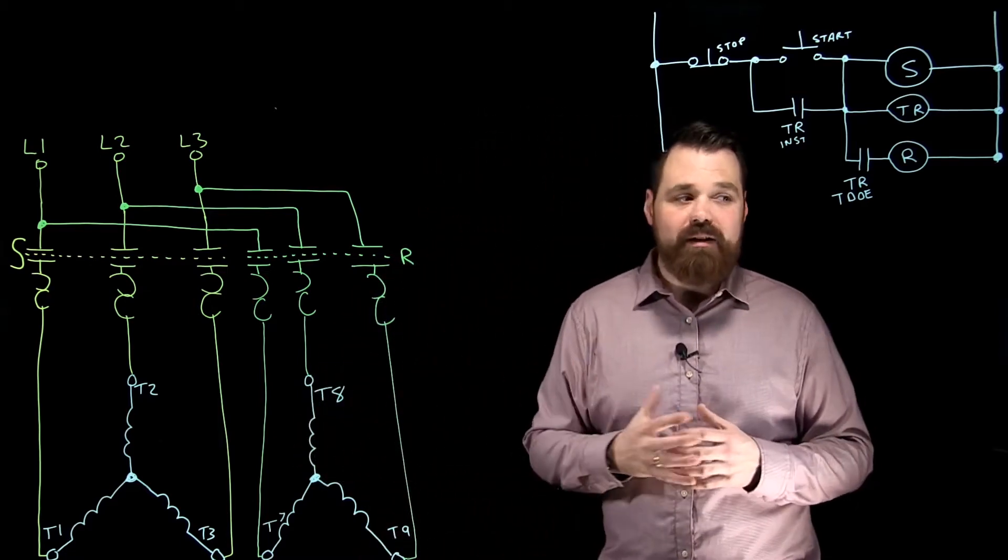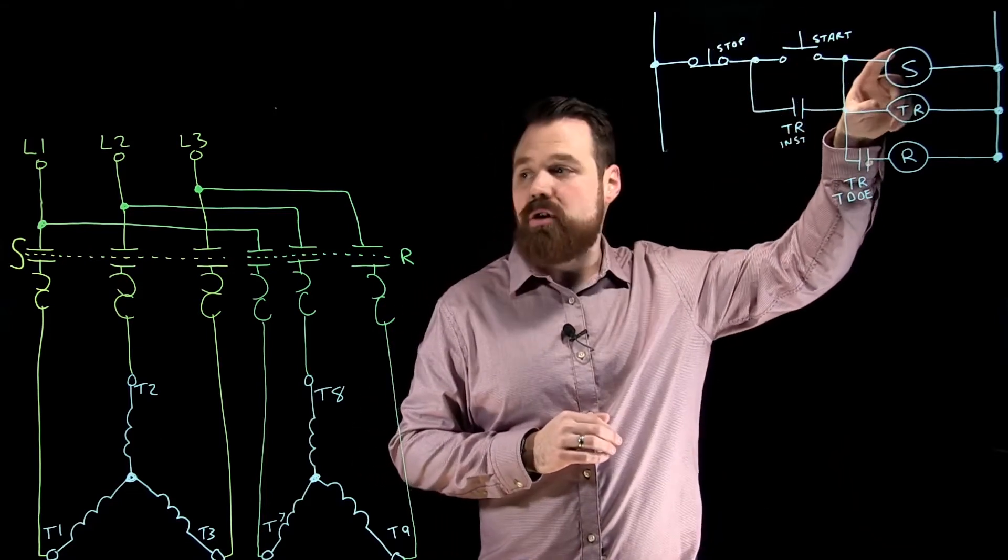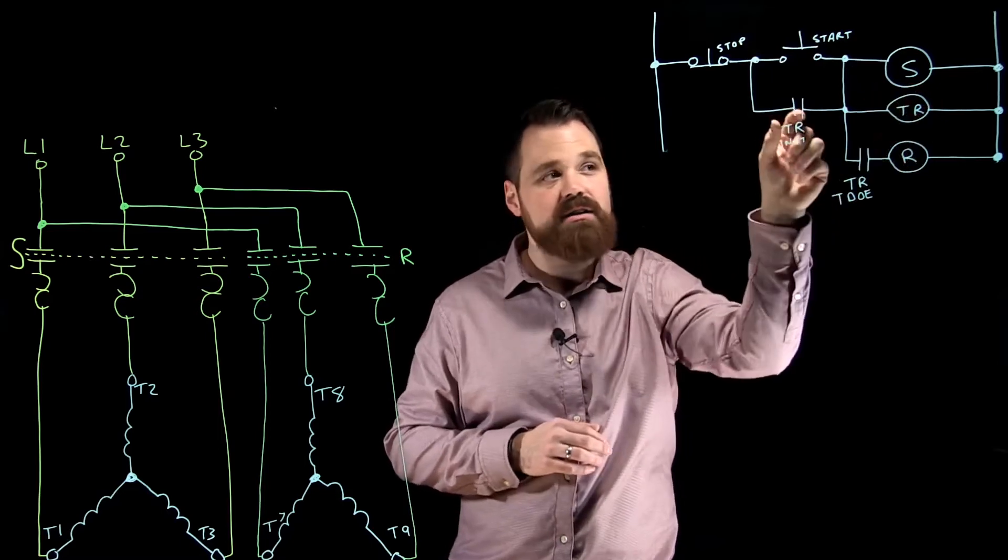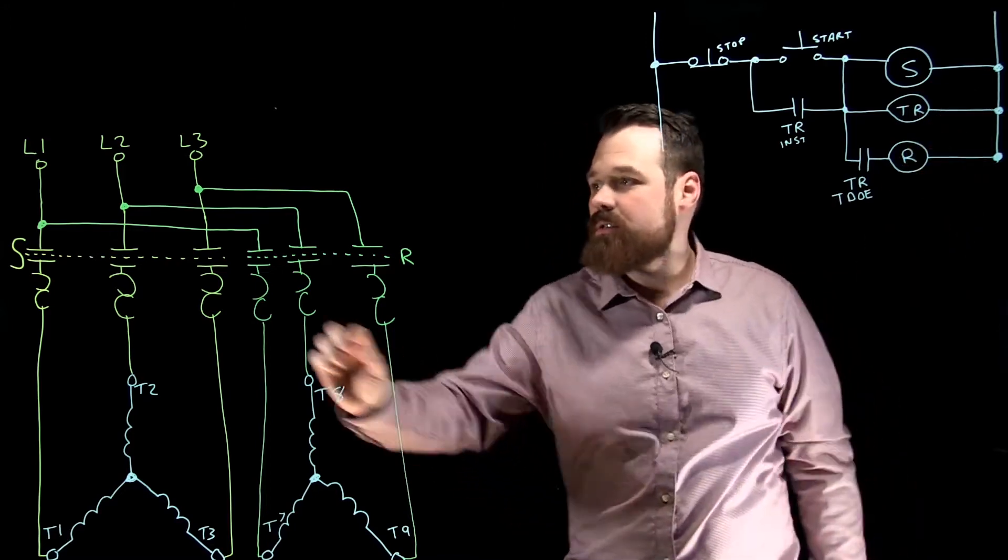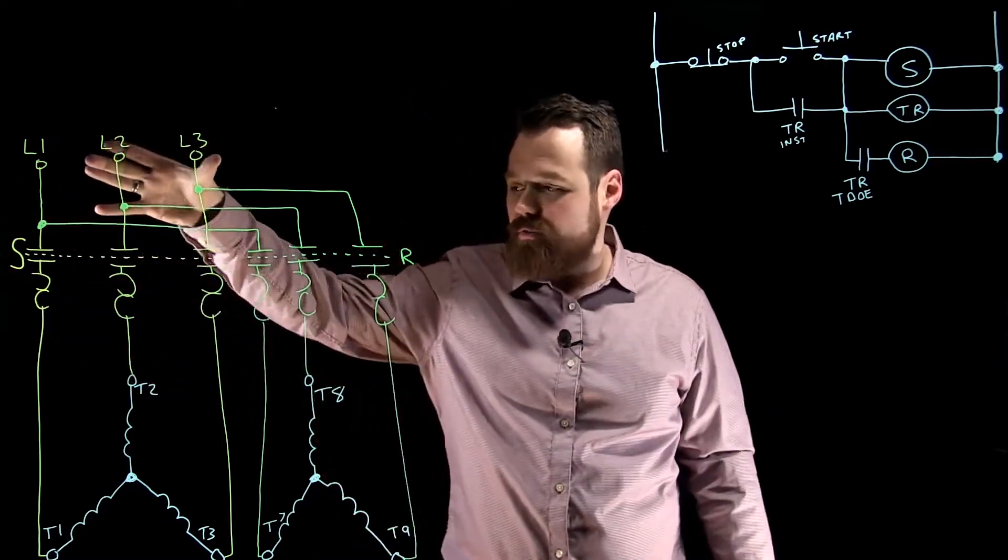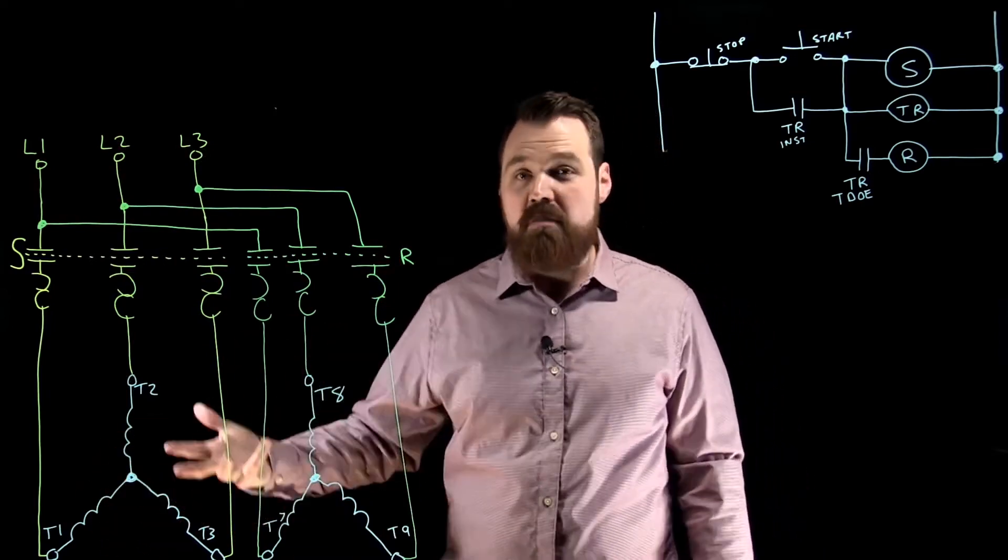So our control schematic looks something like this. Basically we would hit the start button, our start coil would energize as well as our timing relay would energize, closing these instantaneous contacts. When that start coil energizes over here, our starting power contacts energize, current will flow through and energize one of my two sets of windings. The motor will start.